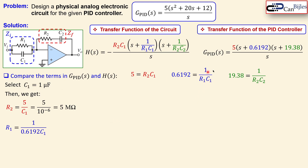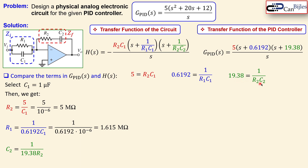With C1 = 1 µF selected, we solve for the remaining components. From the first equation, R2 = 5/C1 = 5 MΩ. Using 1/(R1·C1) = 0.6192, we get R1 = 1.615 MΩ. Finally, from 1/(R2·C2) = 19.38, substituting R2 = 5 MΩ gives C2 = 10.32 nF. We now have all four component values for the circuit.